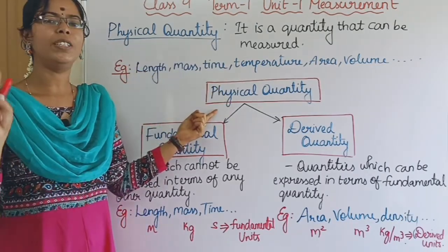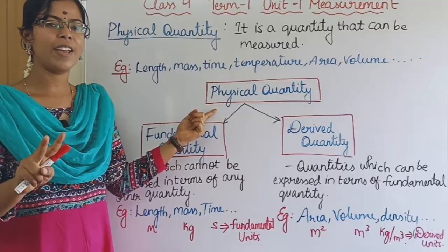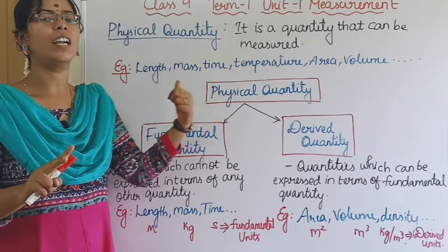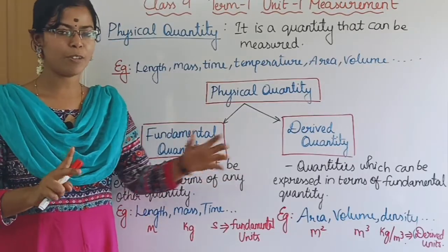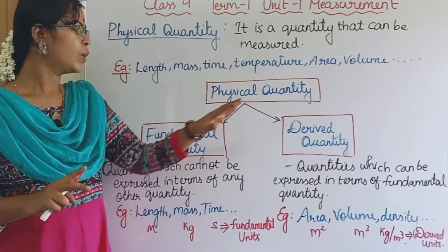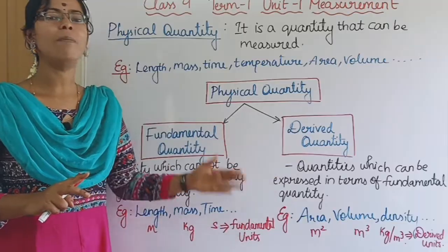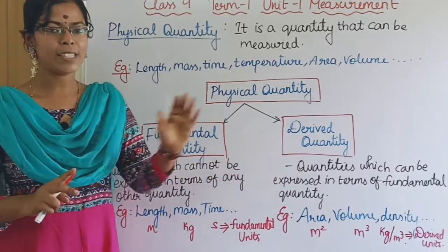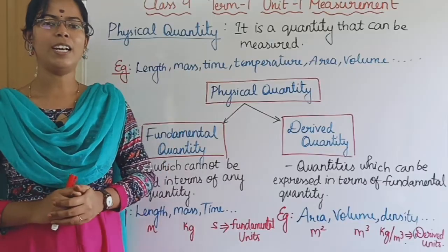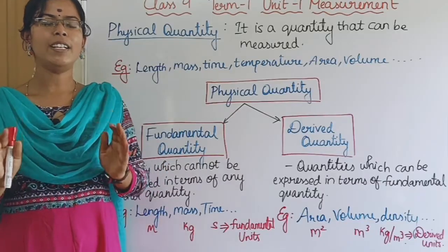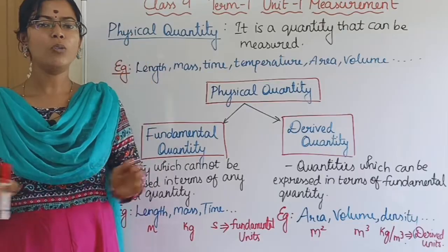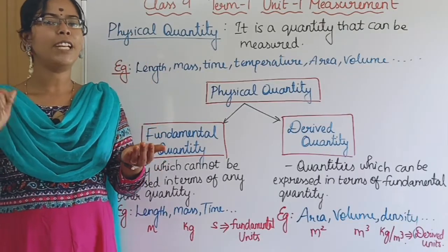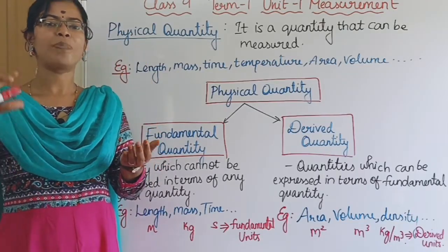In this physical quantity, one is the fundamental quantity and one is the derived quantity. So if you look at the definitions, this is how easy to understand. Let's say that the ground floor is the base — that is the fundamental quantity.